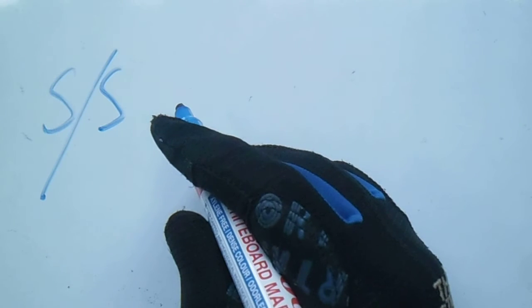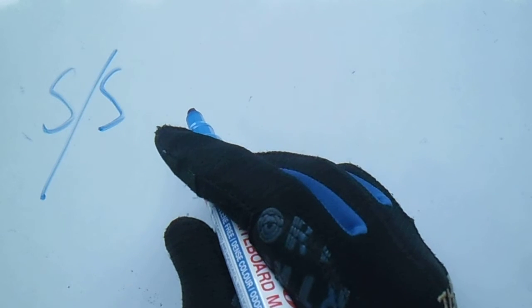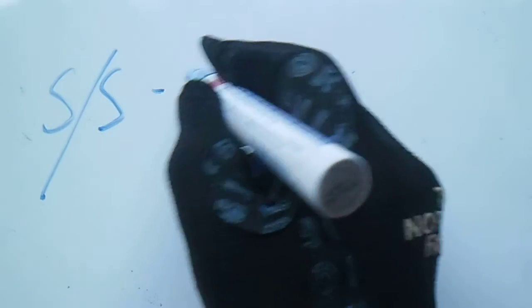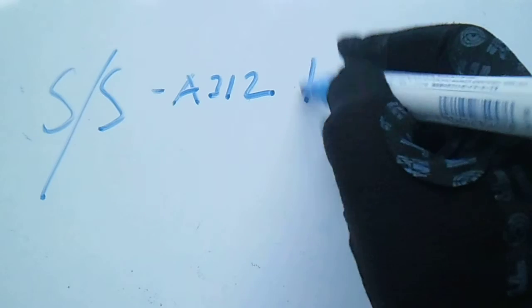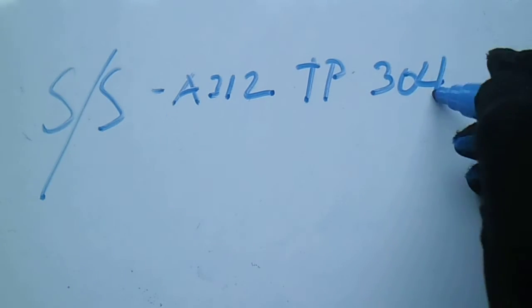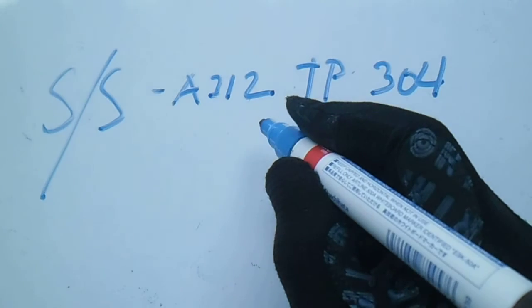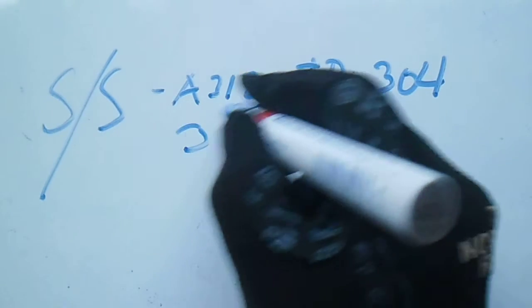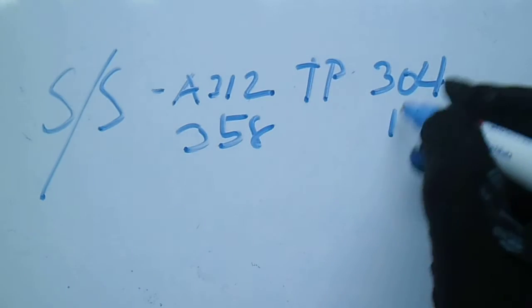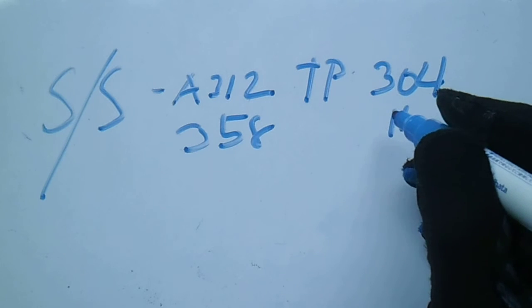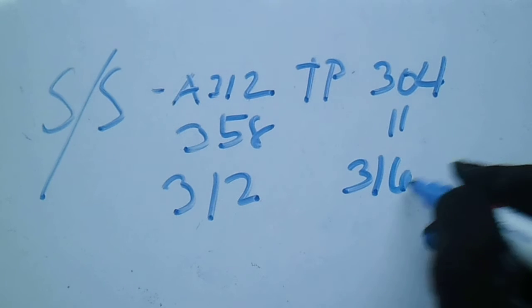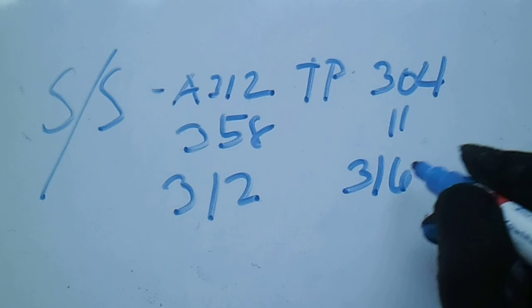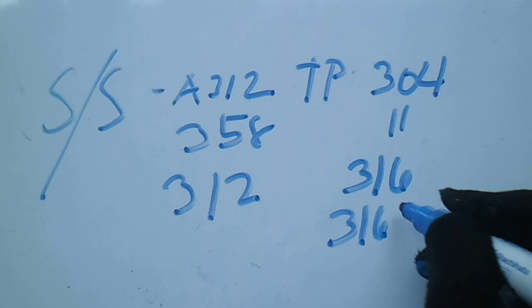Next is Stainless Steel (SS). The ASTM codes are A312 type 304 (seamless), A358 type 304, A312 type 316 (seamless), and A312 type 316L. These cover the main stainless steel pipe grades used in the system.